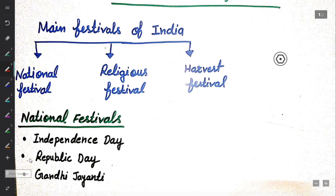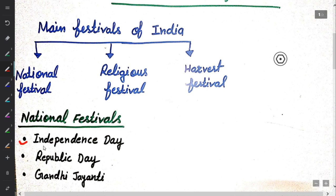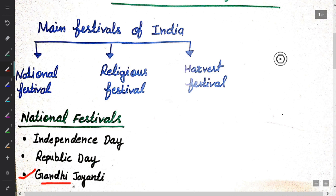The three national festivals celebrated in India are: first, Independence Day; second, Republic Day; and third, Gandhi Jayanti.